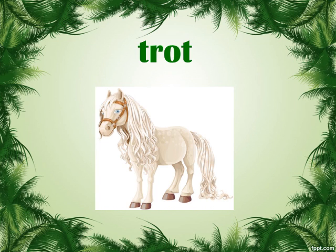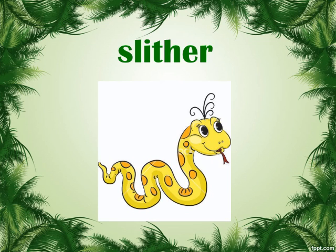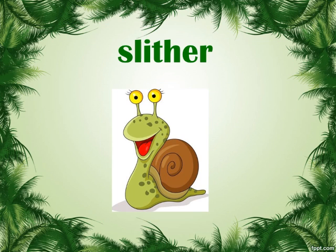What is in the picture? It's a horse. And how does it move? The horse trots. Trot means that it moves fairly fast taking quick small steps. Some animals slither, like a snake and a snail.